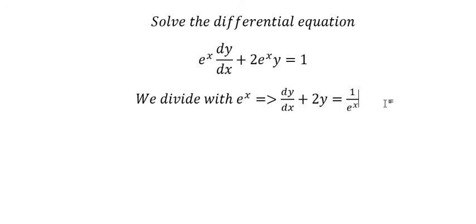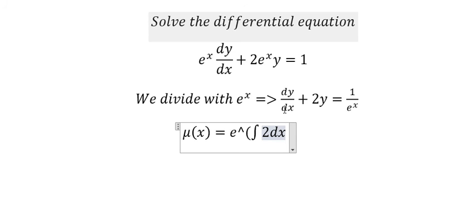Next step. You see that we have the number 2 next to y. So we find the integrating factor μ(s) equal to e to the power of integral of 2ds, because we look at the coefficient next to y. And we get e^(2s).